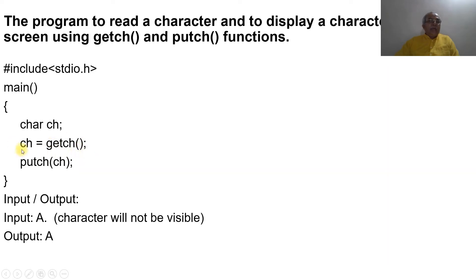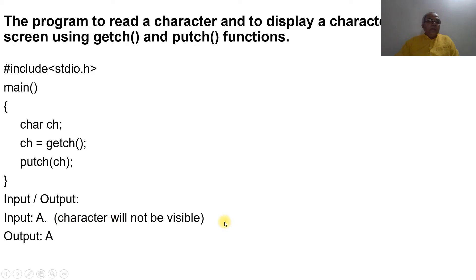Then to display the character, we use the putch function, passing ch as the variable name. So the input will be a character — for example, if you type 'a', it will not be visible due to getch, but once the program runs, putch will display 'a' on the screen.